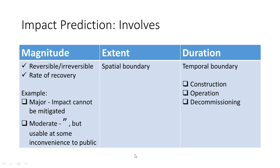In EIA projects, magnitude is typically described descriptively: major impact, moderate impact, medium impact, and so forth. An example of a major impact is one that cannot be mitigated — if it is very difficult to mitigate, the magnitude is very high. A moderate impact means the impact cannot be fully mitigated, but the resource under damage can still be used by the public with minimal inconvenience. That is the kind of general calculation that experts perform.